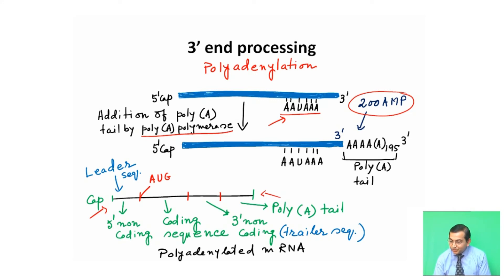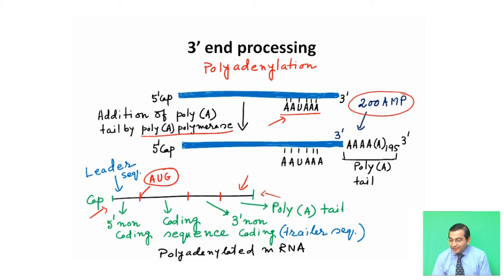In this diagrammatic representation, a cap is present at the 5' end of the primary transcript and a poly-A tail at the 3' end. Between the cap and the start codon AUG, there is a sequence called the leader sequence, which is the 5' non-coding sequence. This is followed by the coding sequence, then the 3' non-coding or trailer sequence, and finally the poly-A tail. This is the structure of a polyadenylated messenger RNA.